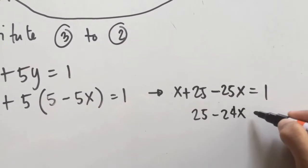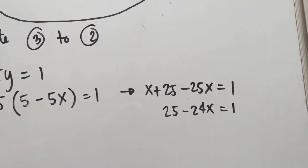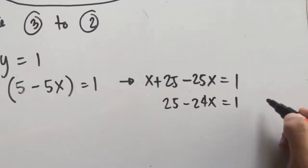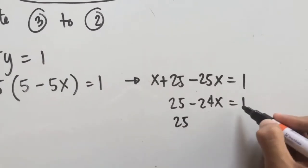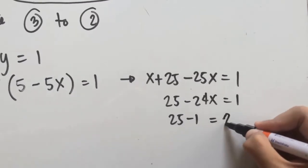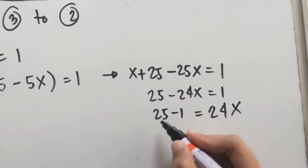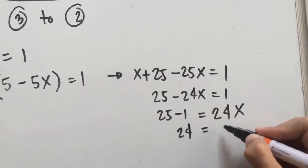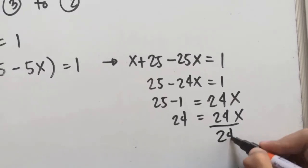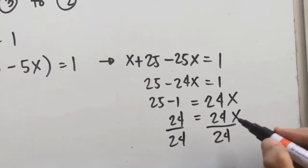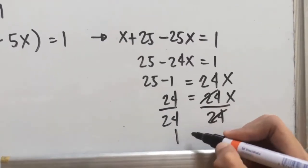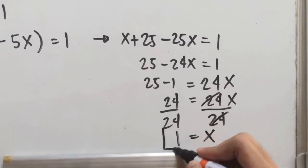Combining like terms: x minus 25x gives us negative 24x, so negative 24x plus 25 is equal to 1. We transfer the constant to the left side and the variable term to the right: 25 minus 1 equals 24x, which gives us 24 equals 24x. Dividing both sides by 24, we get x equals 1.